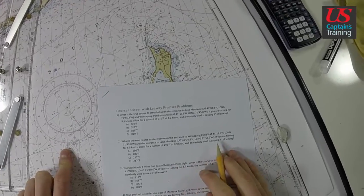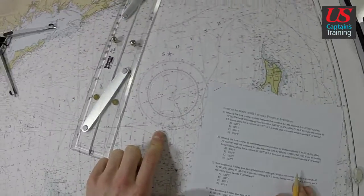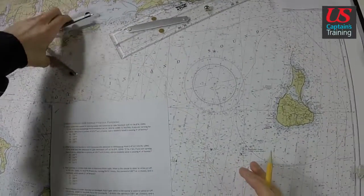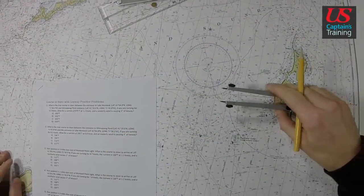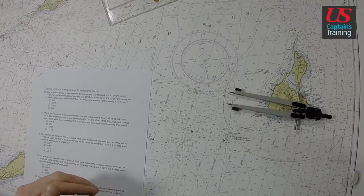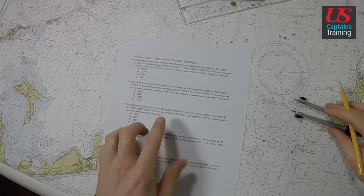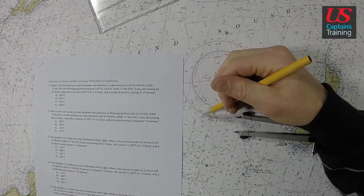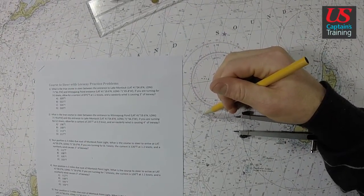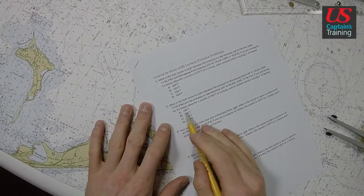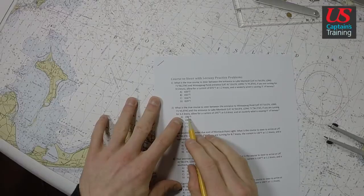And an easterly wind is causing 4 degrees of leeway. An easterly wind. Let's think about that. If these dividers are the wind, the wind's blowing east. Right? It's coming from the east. And it's 4 degrees leeway. We need to correct into it. So, 200 minus 4 is 196. 196. Here. 196.